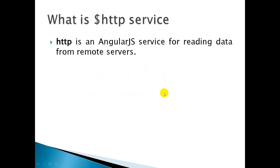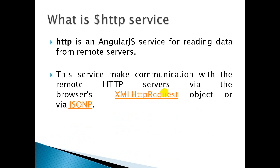HTTP services are AngularJS services by using which we can read the data from the database server. For example, if you have written a particular action in your controller and you want to call that action through the JS framework, you can use HTTP services. These requests can be made through XML HTTP request as well as JSONP. JSONP is used whenever you want to exchange data from client to server and server to client through JSON.